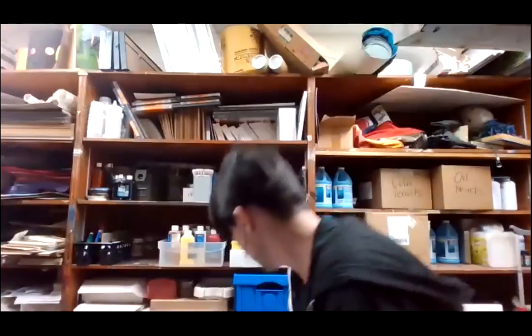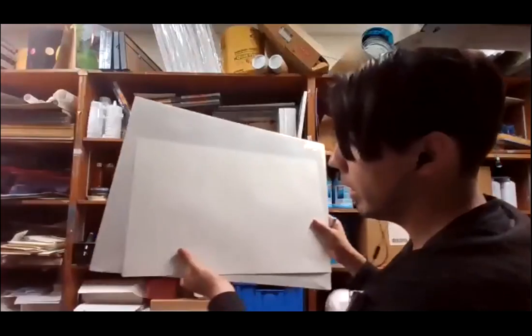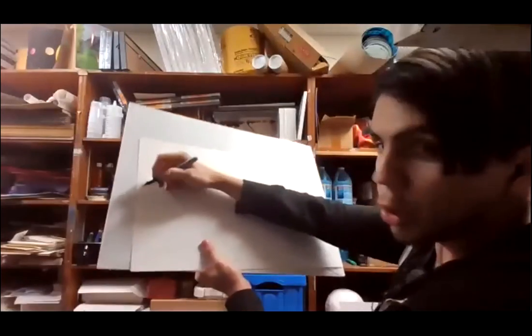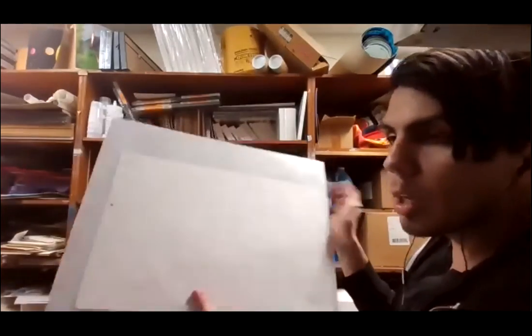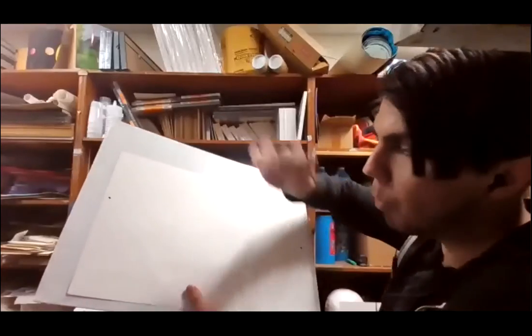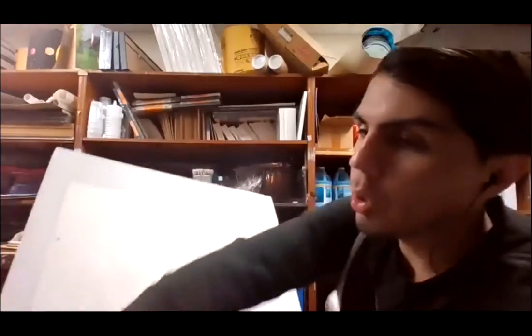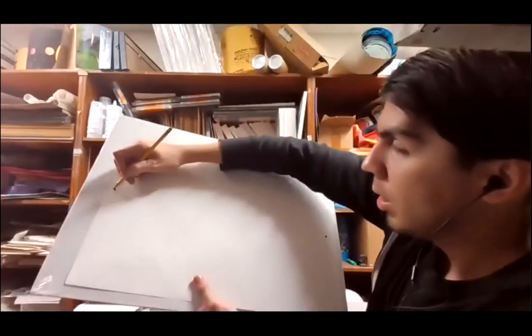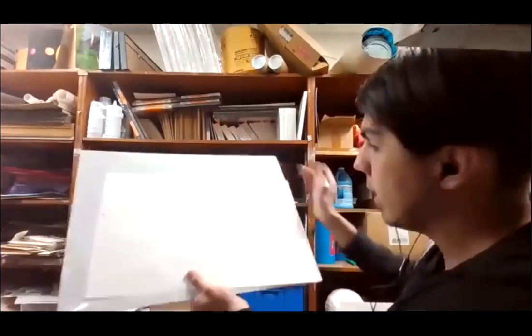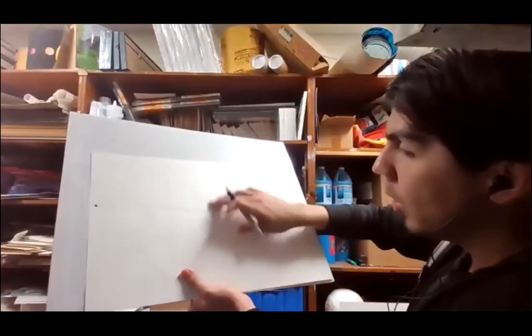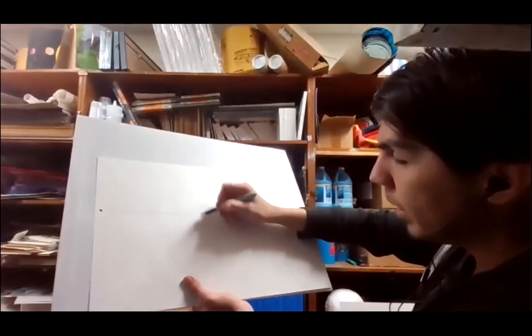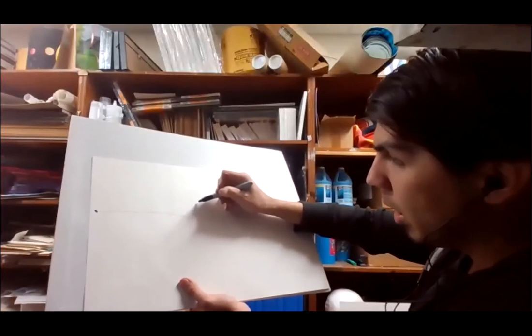Now that you've seen one point perspective, I'm going to do two point. Two point is for those who really want to do something big and really good. For two point perspective you start with two dots. This is more complicated — you can do one point or two point, or both. For this one you need a horizon line, so I'm drawing it lightly with pencil. Make sure to use pencil so you can erase.